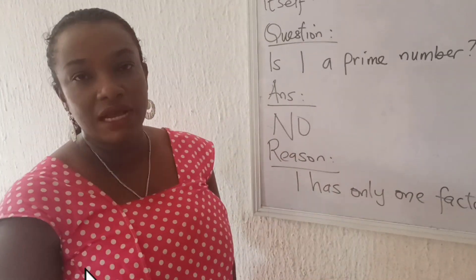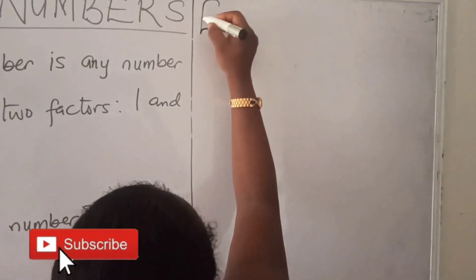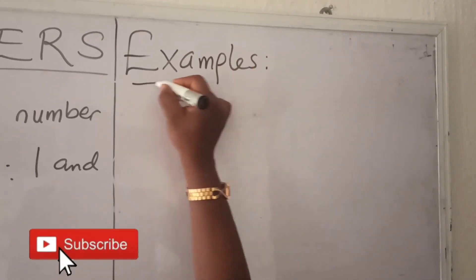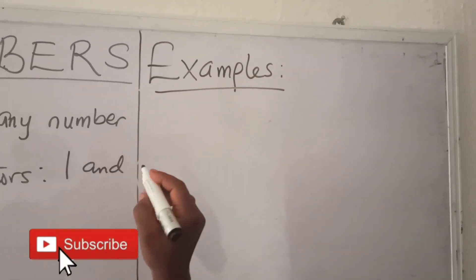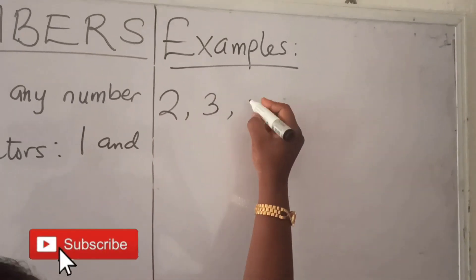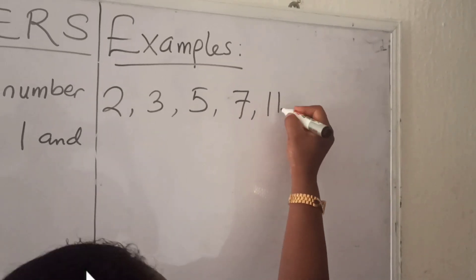Okay, now let's look at some examples of prime numbers. Some examples of prime numbers are 2, 3, 5, 7, 11,